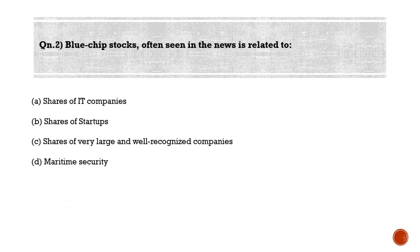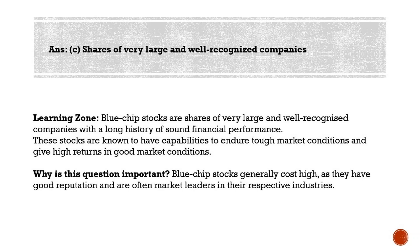Now we move to the second question: 'Blue chip stocks', often seen in the news, refers to — option A: shares of IT companies; option B: shares of startups; option C: shares of very large and well-recognized companies; option D: maritime security. The correct answer is option C. Blue chip stocks are shares of very large and well-recognized companies with a long history of sound financial performance. These stocks are known for their ability to endure tough market conditions and give high returns in good market conditions.